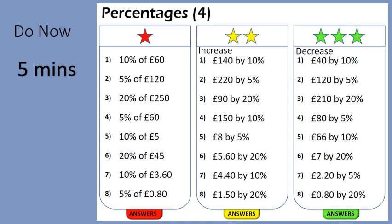To start us off today, we're going to do this Do Now task. It's reviewing some of the work that you did last week on percentages. I'm expecting this task to take about five minutes — that includes marking your answers using the answers given on Show My Homework. Both this worksheet and the answers are also attached there. You can choose one of the columns to complete, not all three. The first is calculating percentages, the second is increase questions, and the third is decrease questions. Pause the video now and complete those questions for about five minutes.